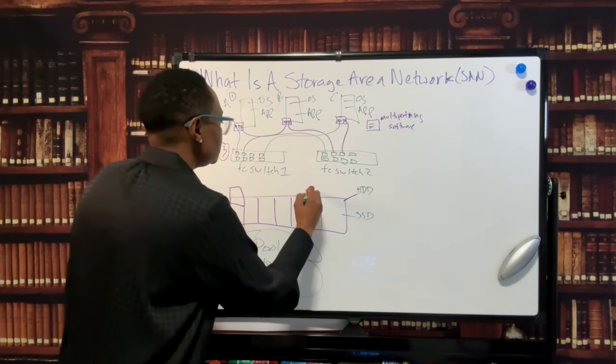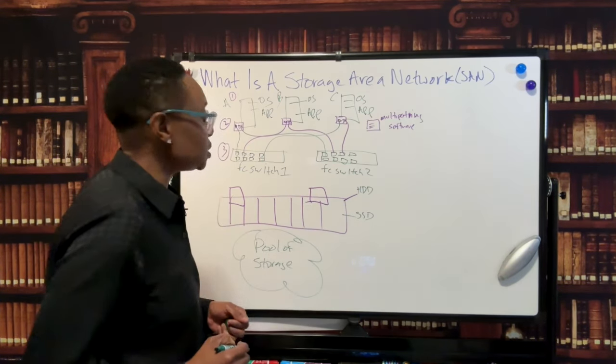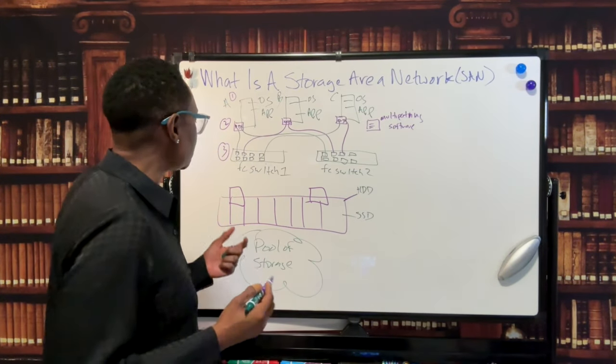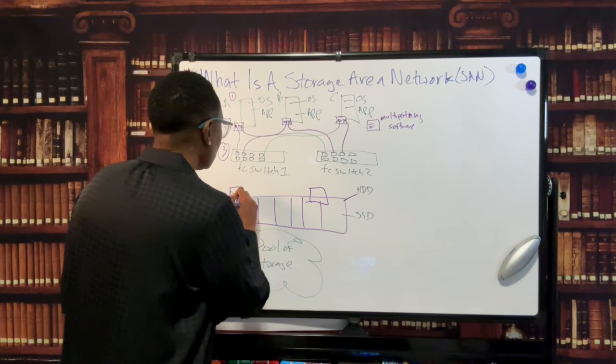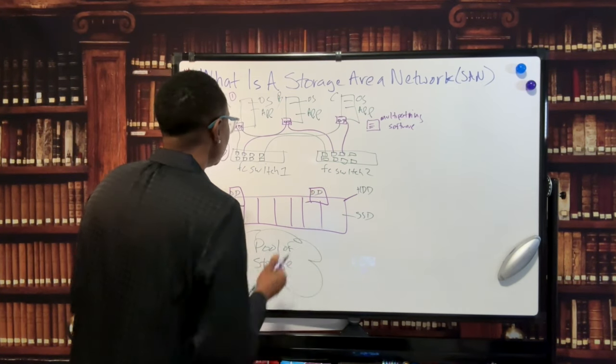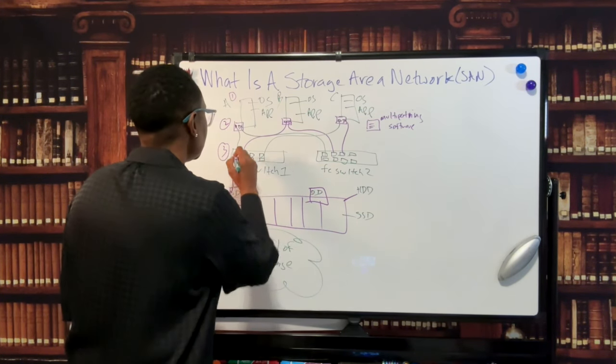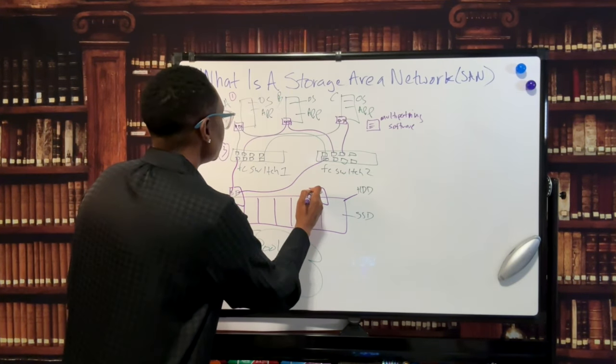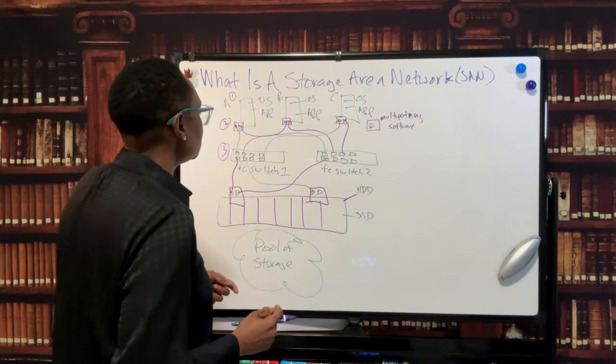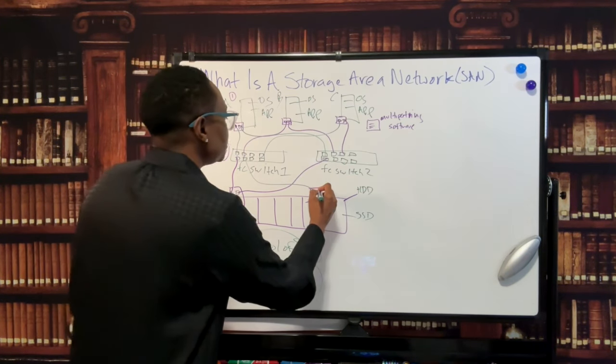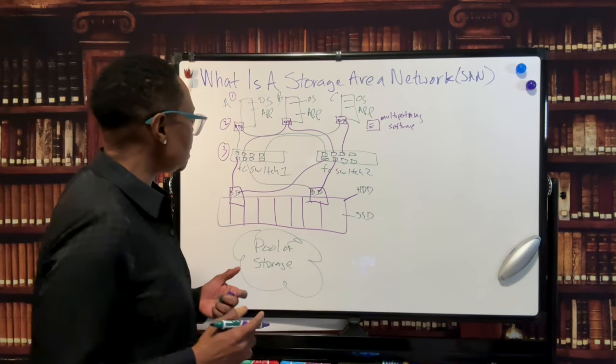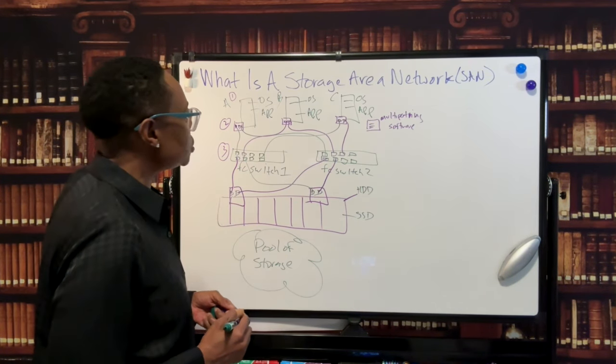So also these disk arrays have dual controllers. The controllers handle the IO operations and data management, and it also has redundancy built into it. So this controller is also cabled up to the switch or switches - it has two connections going to each switch for redundancy purposes.